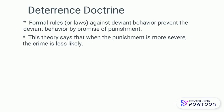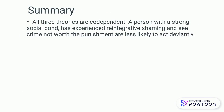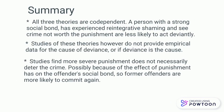Deterrence doctrine theory. Formal rules or laws against deviant behavior prevent the deviant behavior by promise of punishment. This theory says that when the punishment is more severe, the crime is less likely. This theory may be true for first-time offenders because the punishment is more severe. In summary, all three theories are codependent. A person with strong social bonds...